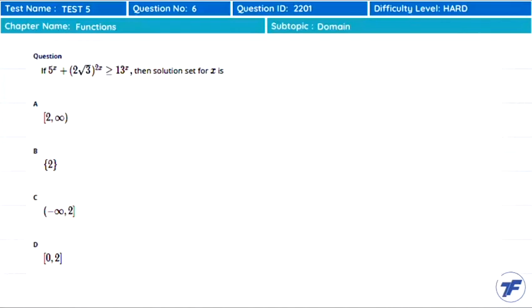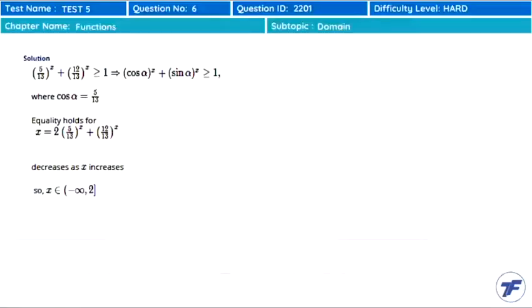If 5^x + (2√3)^(2x) ≥ 13^x, then the solution set for x is given with 4 options. This is a very nice question. Let's look at the solution.